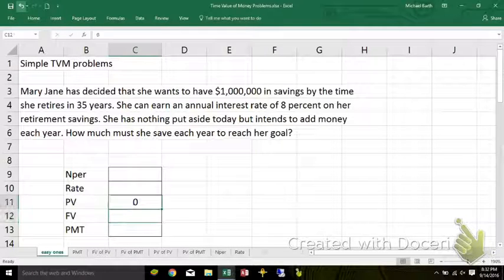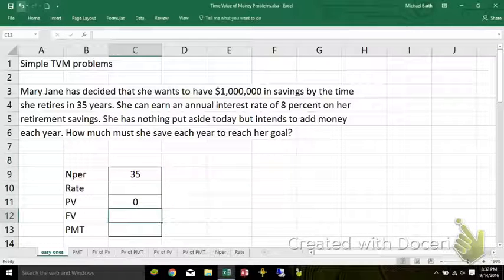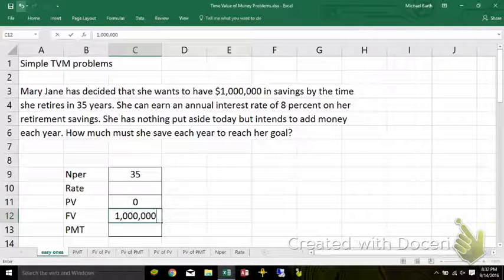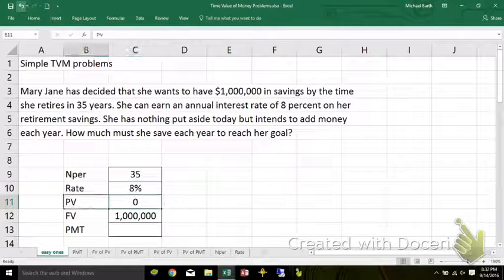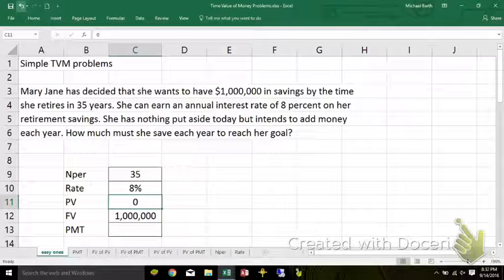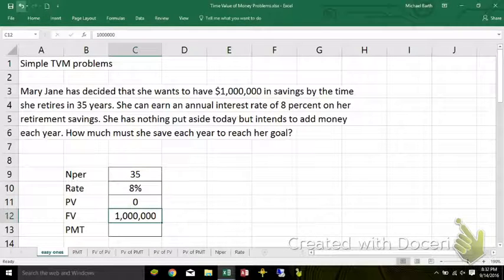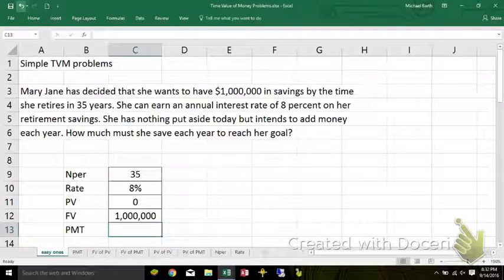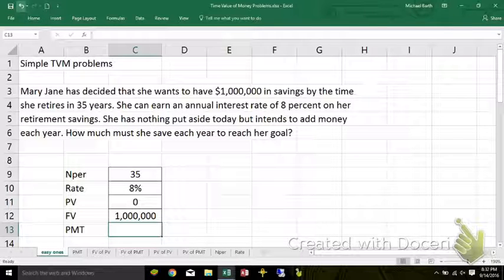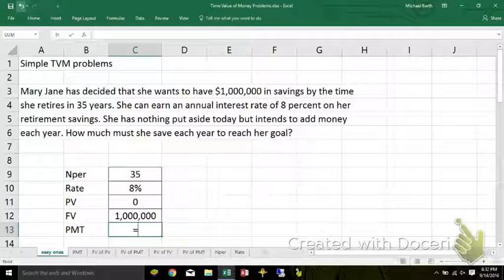35 years in the future, she wants to have $1 million. She currently earns 8% on her retirement account. Now she's not earning any dollars of interest but the account itself earns 8%. 8% of zero is zero. But she's going to add money in there at the end of every year for the next 35 years. She wants to know how much money she needs to put in every year to end up with $1 million after 35 years.